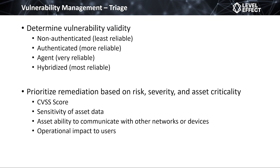Once we verify that a vulnerability truly exists on a machine, we need to prioritize those vulnerabilities, because we can have multiple vulnerabilities with the same CVSS score. We need to understand the sensitivity of that asset — which business unit it's tied to, what that business unit's goals are, and how it impacts the organization. If we don't understand how our company makes money and operates, we can't assess the sensitivity of an asset.